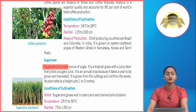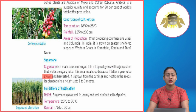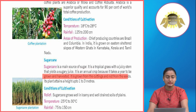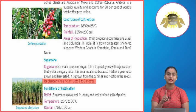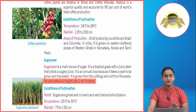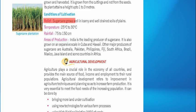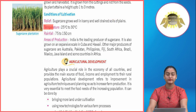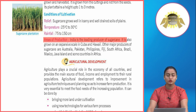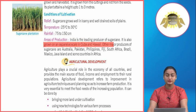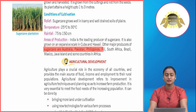Sugar cane is the main source of sugar. It is a tropical grass with a juicy stem that yields a sugary juice. It is an annual crop because it takes a year to be grown and harvested. It is grown from cuttings and not from seeds. Its plant attains a height of 1 to 3 metres. Conditions of cultivation — Relief: Sugar cane grows well in loamy and well-drained soils of plains. Temperature: 25 to 30 degrees Celsius. Rainfall: 75 to 150 cm.